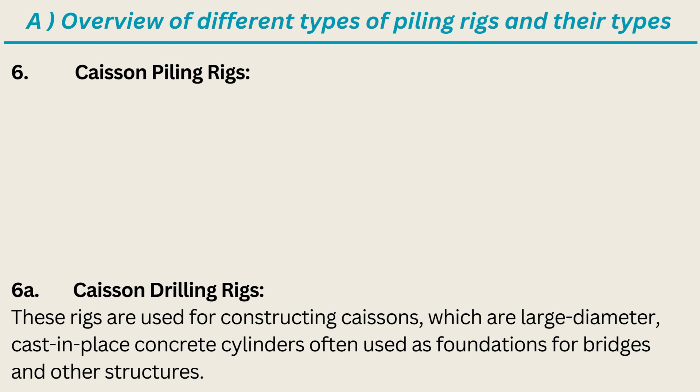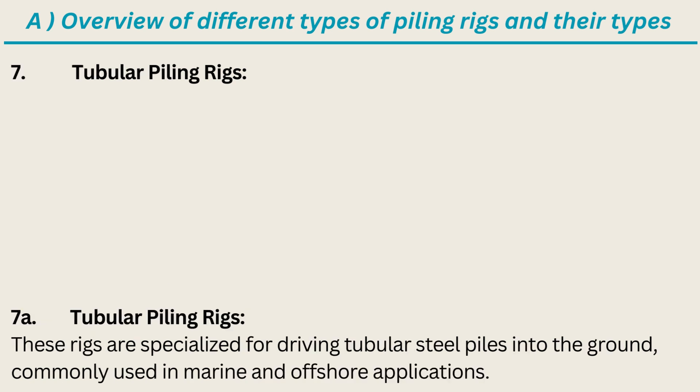Caisson Piling Rigs — Caisson Drilling Rigs: these rigs are used for constructing caissons, which are large diameter, cast-in-place concrete cylinders often used as foundations for bridges and other structures.